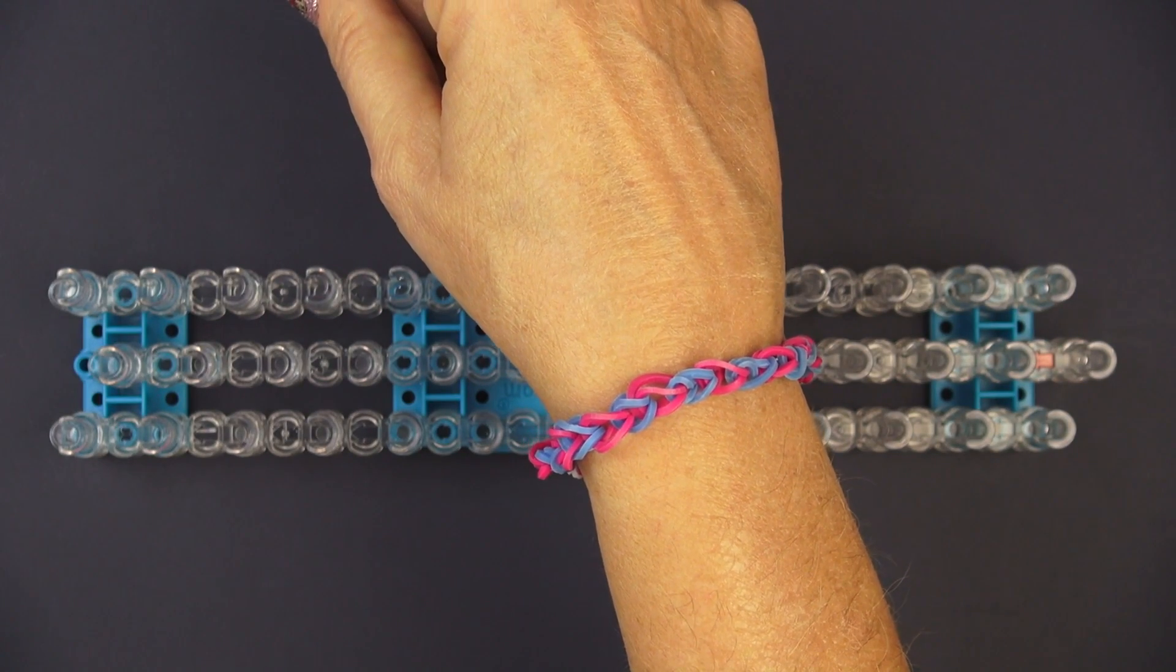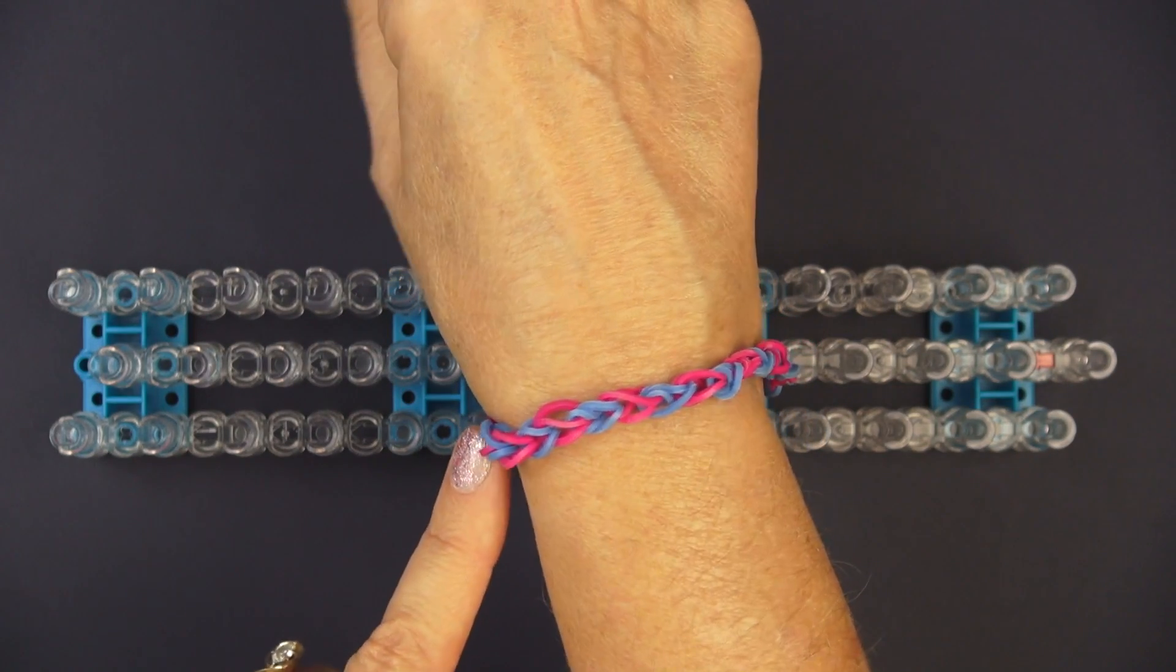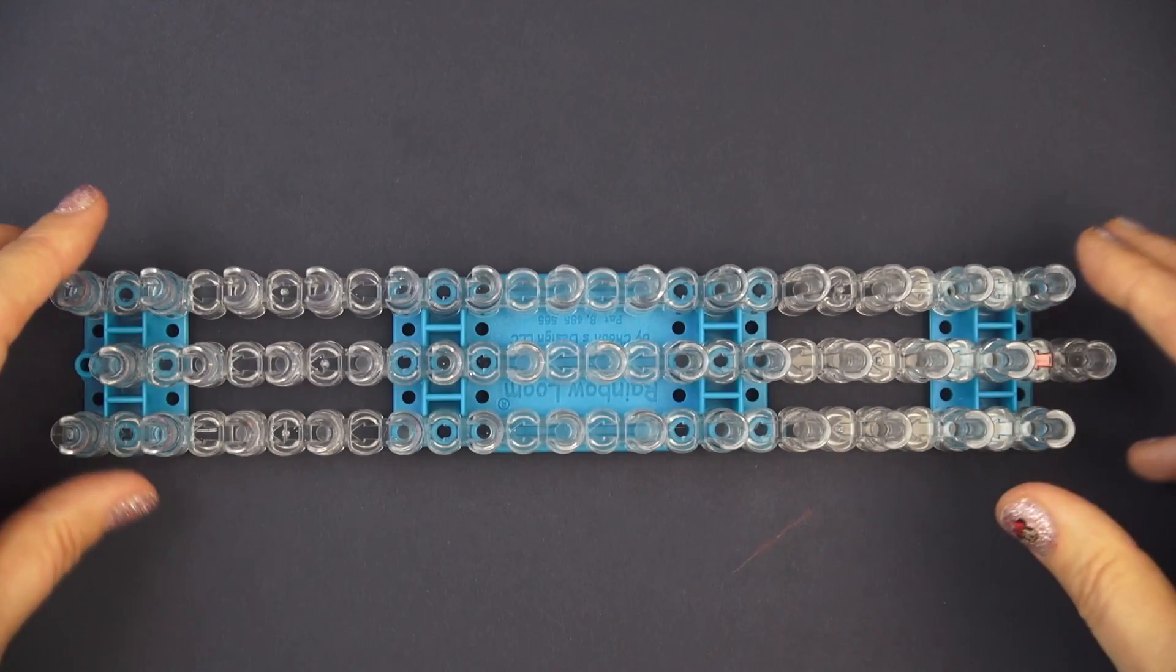This is the bracelet we're gonna make today. It's called a single loop bracelet. It's really cute and really easy. Let's take a look at the loom.